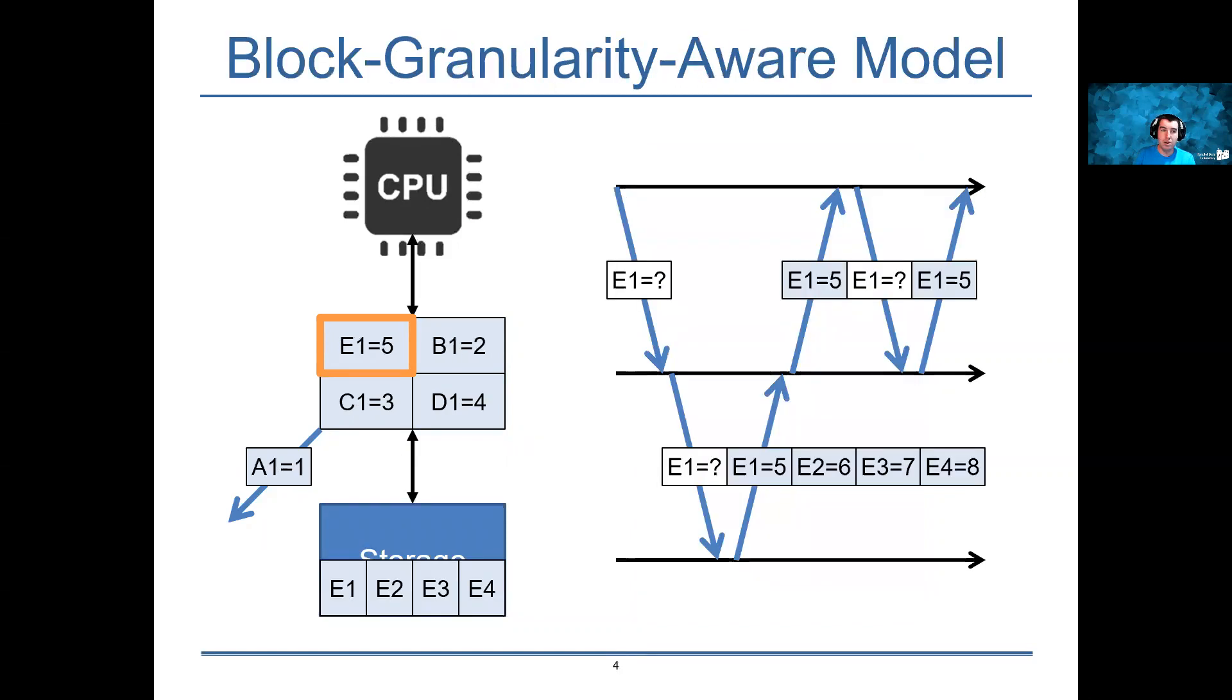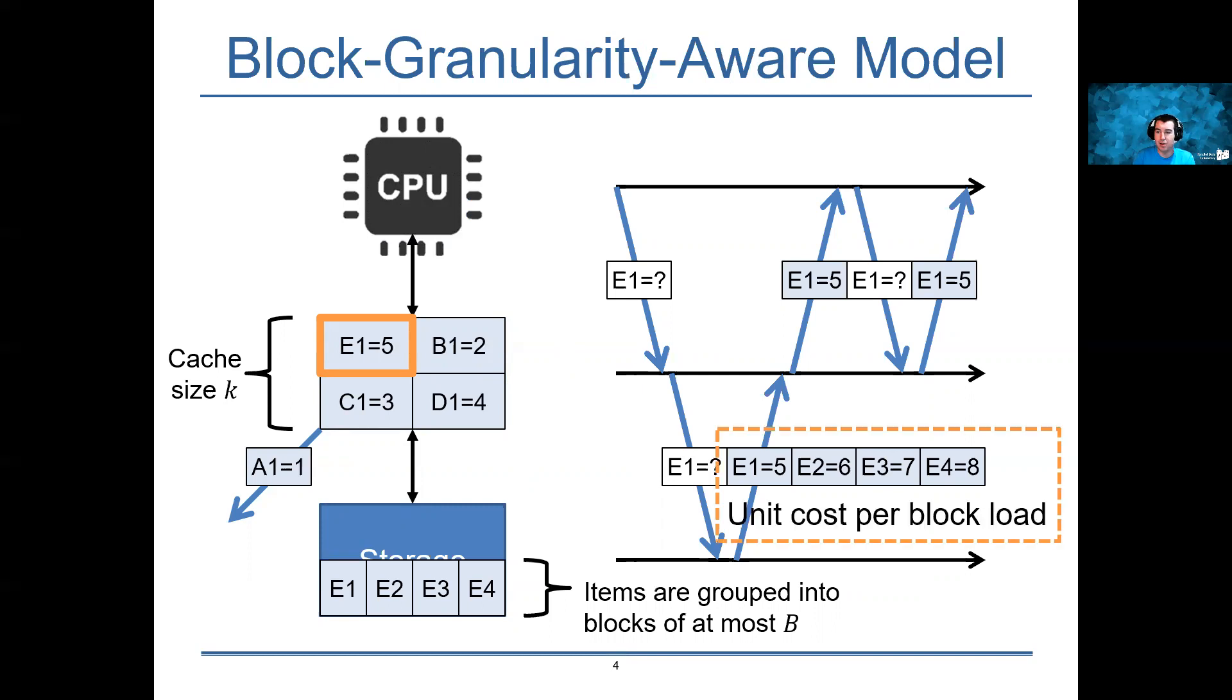In particular, our model, the block granularity aware model, looks like a traditional caching model where you have a cache of size k and it serves accesses as we discussed earlier, but with the modification that the data items are grouped into blocks of at most b. So the total universe of items is partitioned into groups, and each group contains at most b items in it. In this model, we say that each block loaded by the cache is charged unit cost, or the typical model where you pay some amount per item loaded. Our work provides the first theoretical foundation for spatial locality in caching with the block granularity model.